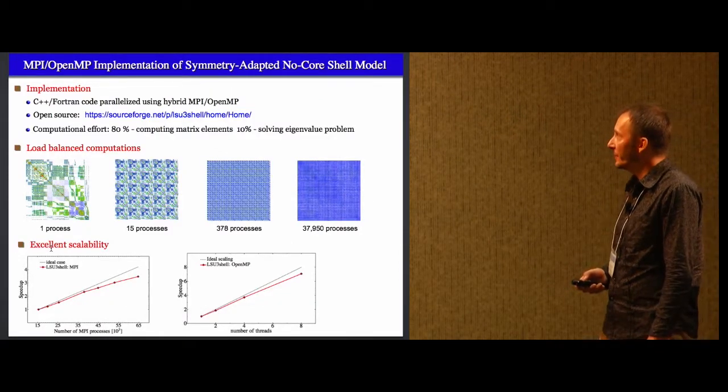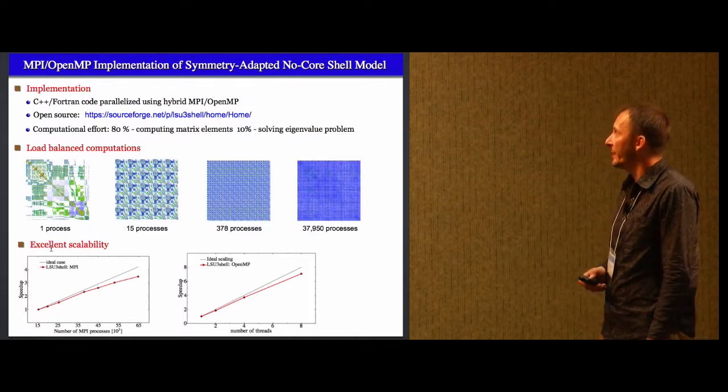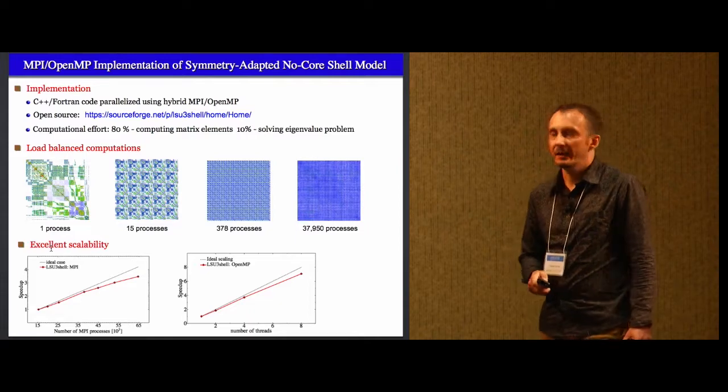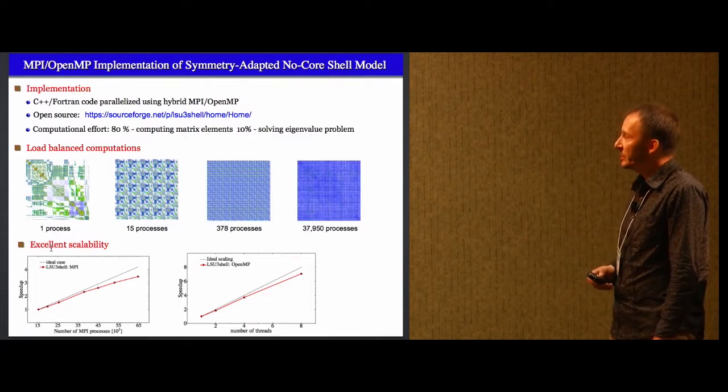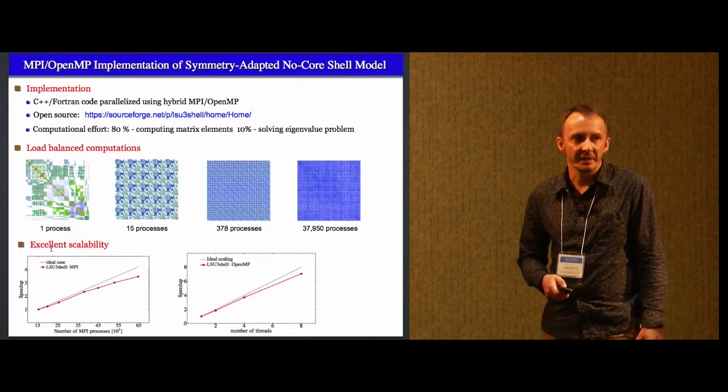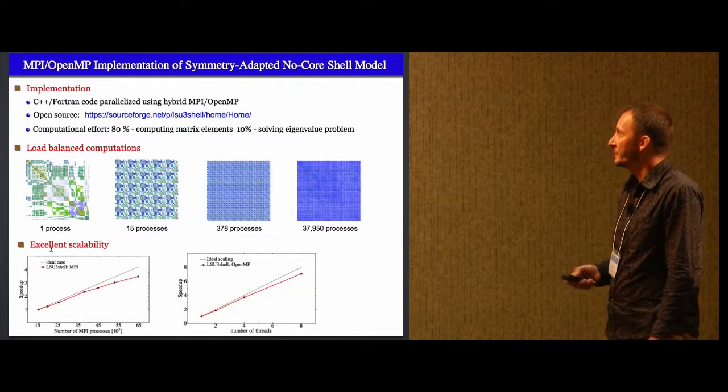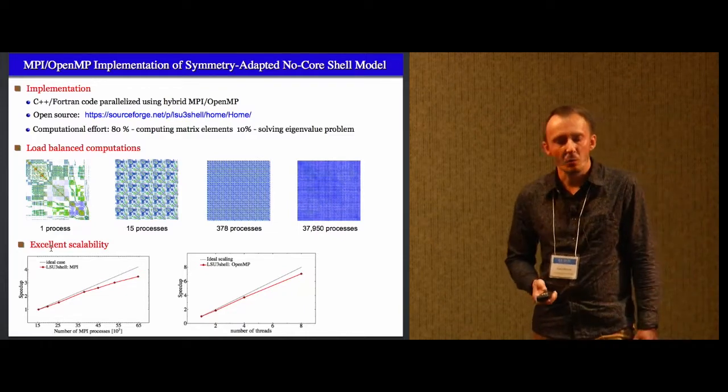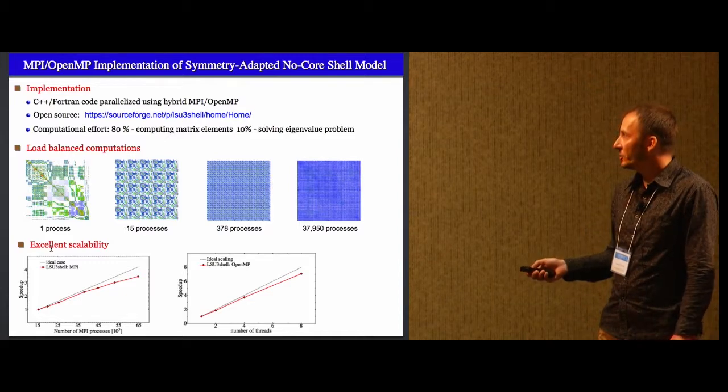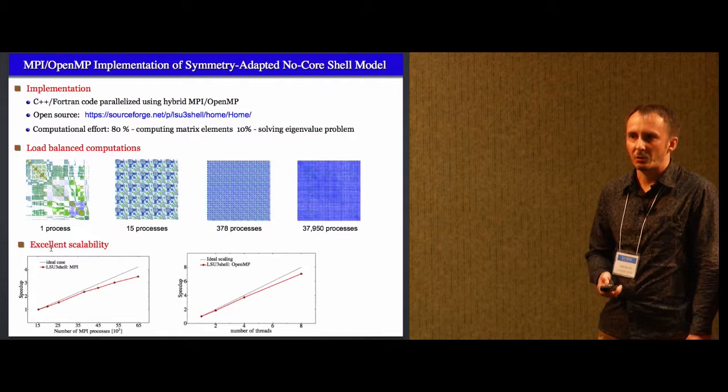So something about the code that we are using. We developed our own implementation of symmetry adapted no-core shell model. It is a hybrid C++ Fortran code that's parallelized using MPI OpenMP hybrid approach. Everything we develop is open source. You can see that this is a Git repository that's publicly available. And what's interesting is that 80% of the computational effort is spent on computing non-zero matrix elements. This is actually good because you don't need to communicate during this phase of calculation. So it's perfectly scalable. Only 10% of the algorithm is spent on the last step when we are solving Lanczos algorithm. This picture here just shows that we find a way how to distribute matrix elements between processes in a uniform way. So we achieve a good load balancing. And finally, these two pictures show that we have very good scalability. And currently we are using, for the biggest calculation, entire Blue Waters machine.